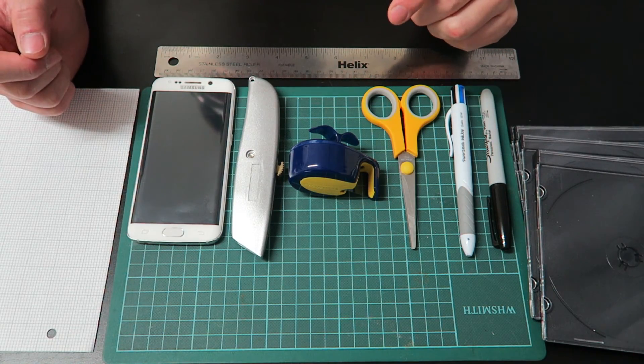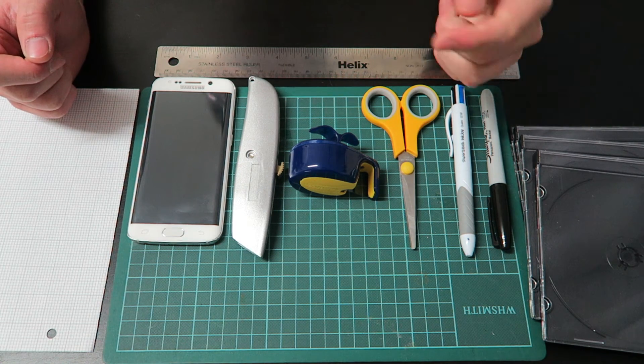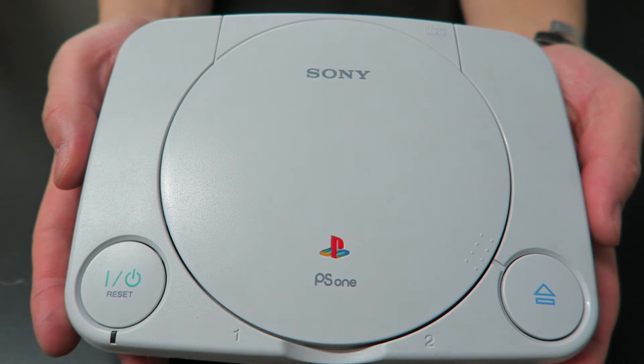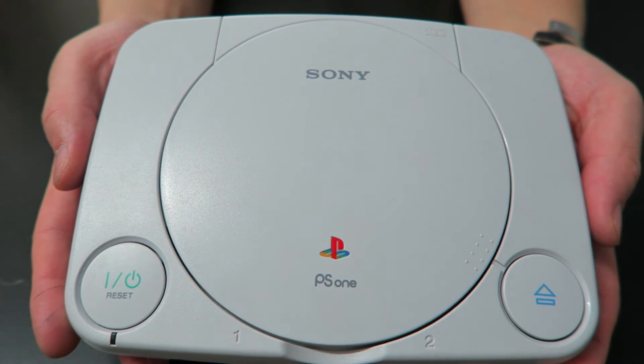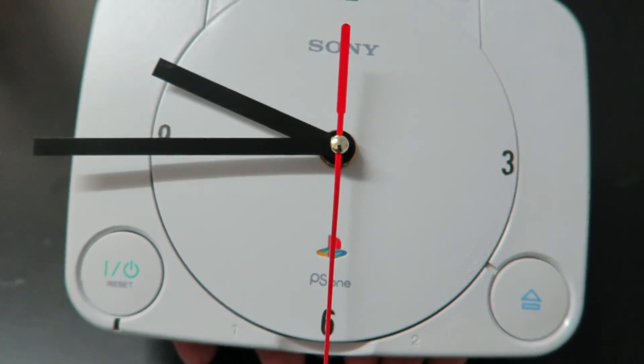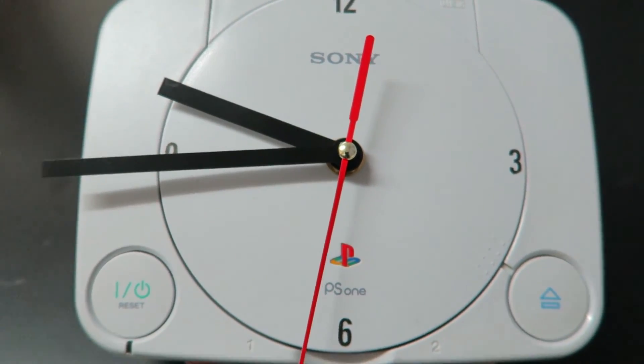Another thing I like to do is making stuff, like this for example. This is a broken PS1. It broke because I may have put the wrong power supply in and fried the circuit board, but still, I didn't really want to throw it away, so boom—turned it into a clock. Pretty cool, huh?